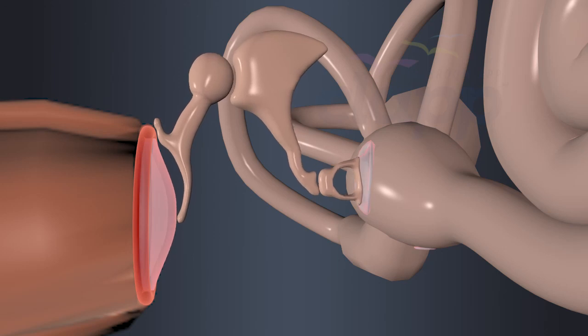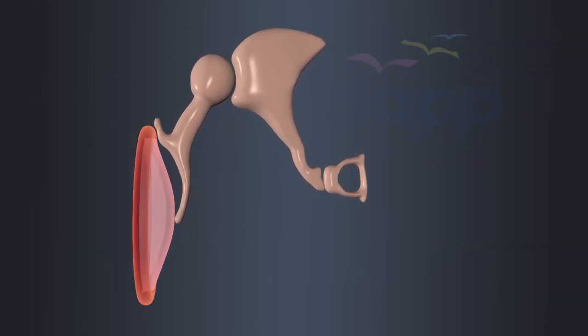This amplifies the sound waves and transmits them to the middle ear. The vibrations of the eardrum are then transferred to the ossicles in the middle ear.